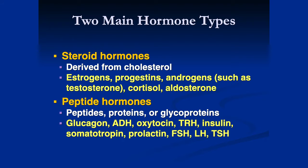The major types of hormones: steroid hormones are derived from cholesterol. They include estrogens, progesterones, androgens such as testosterone, cortisol, and aldosterone.